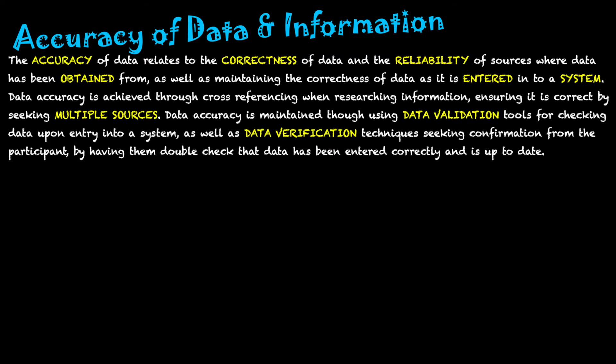The accuracy of data relates to the correctness of data and the reliability of the sources where data has been attained from, as well as maintaining the correctness of data as it is entered into the system. We're making sure we've gotten our data from reliable sources, and as we put that data into our information system, we're ensuring it goes in correctly. So the data on our system is correct because we checked it at those two levels.